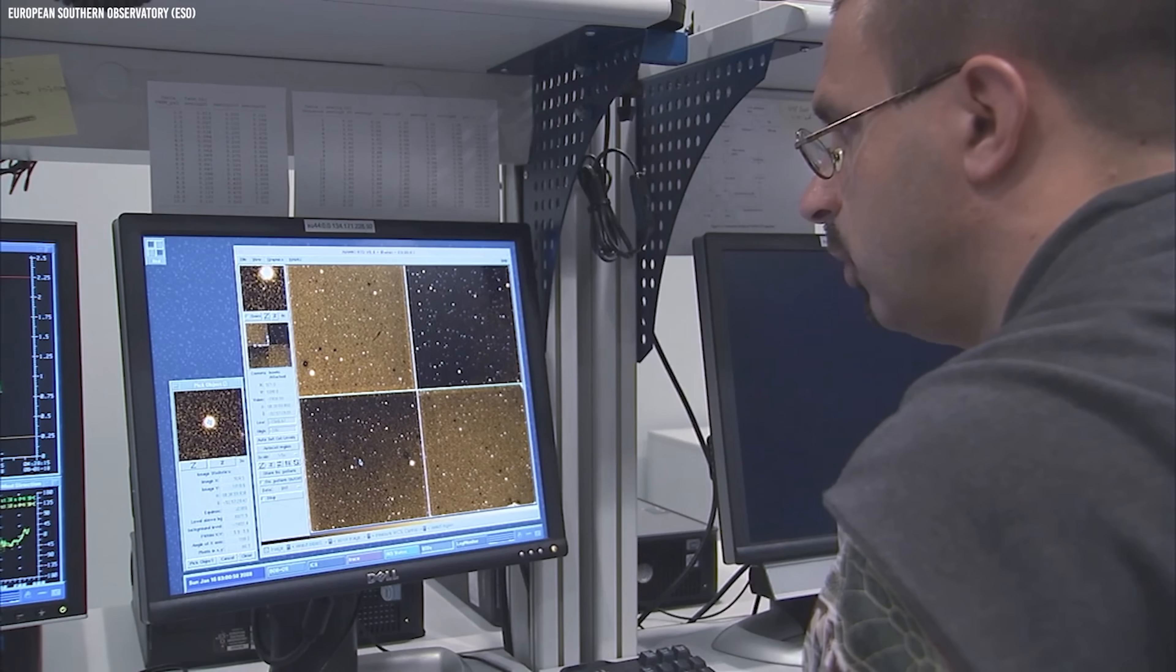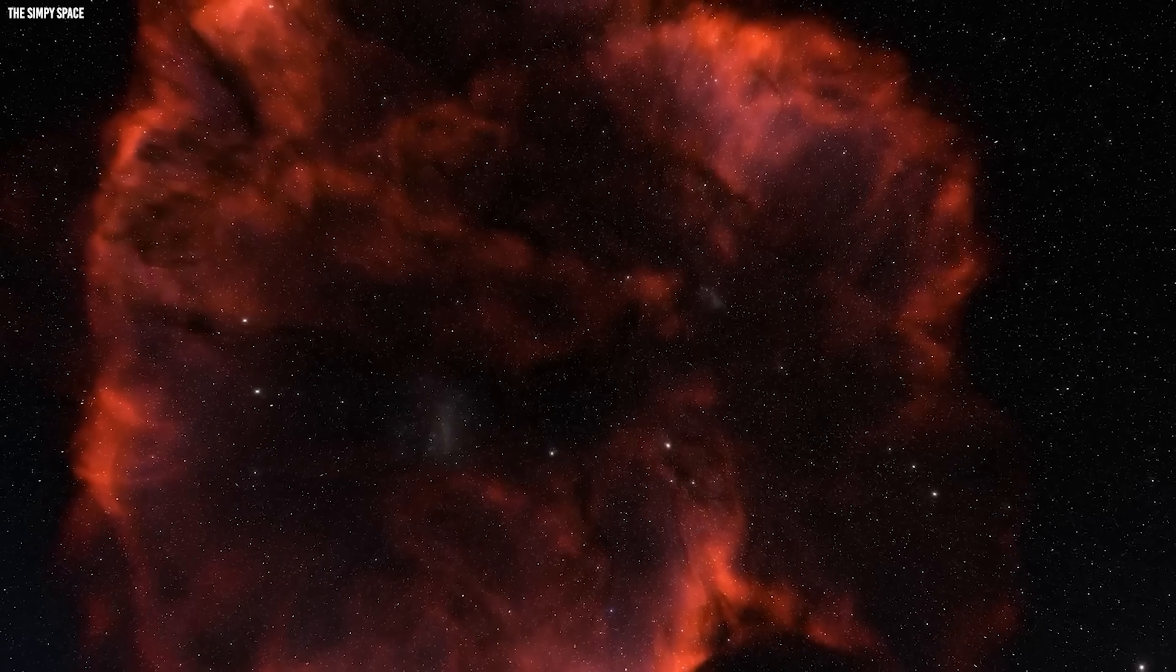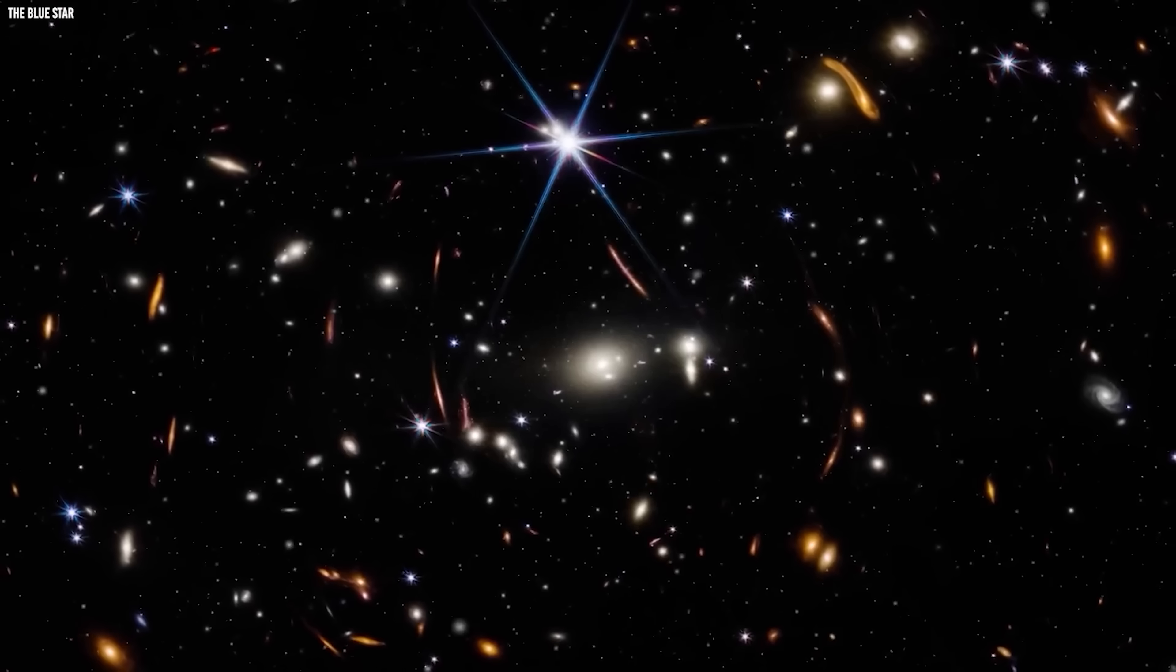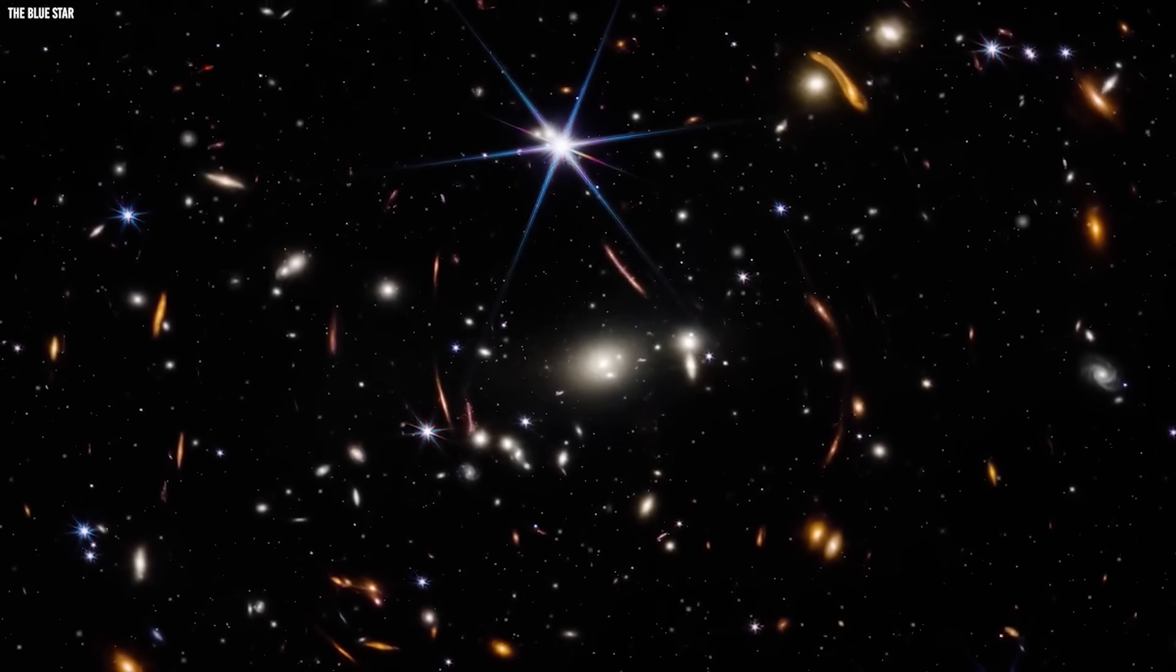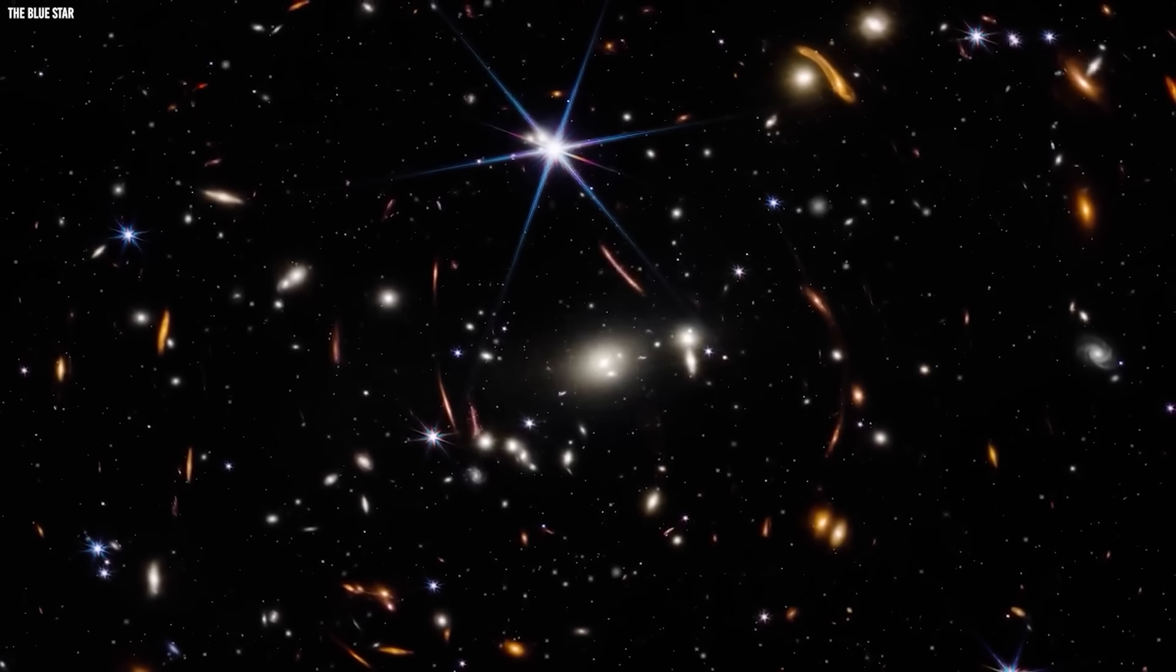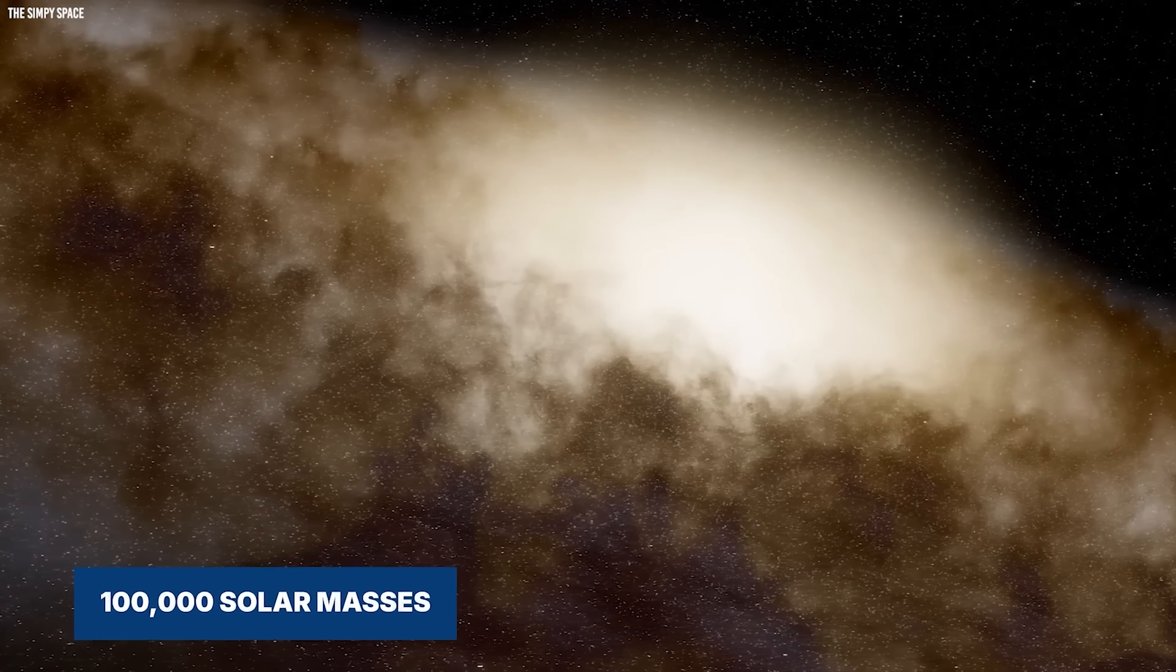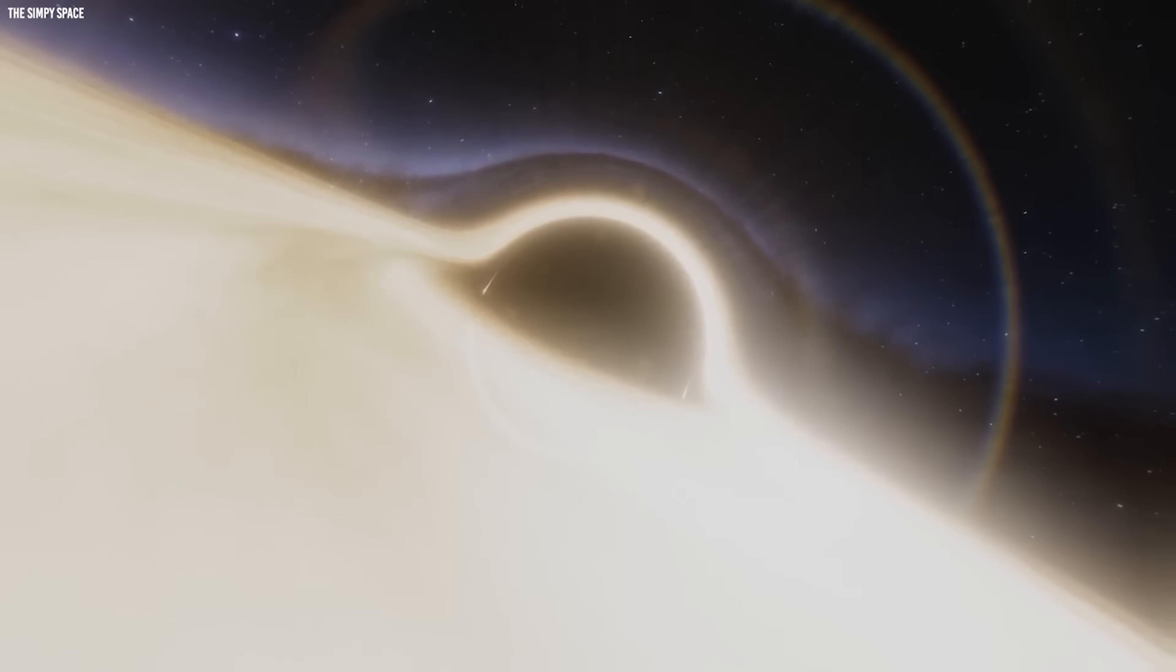One idea is direct collapse, a hypothetical process where a massive cloud of primordial gas collapses into a giant black hole without ever forming stars. But direct collapse black holes were predicted to form at around 100,000 solar masses. Maybe a million at most. Not hundreds of millions.